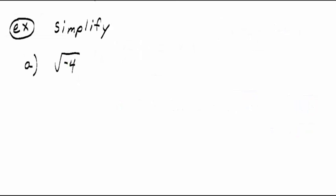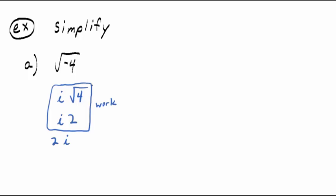The square root of negative 4: you always poke the I out first. Using that property, you rewrite it as I times the square root of 4. The square root of 4 is 2, so I times 2, written as 2I, is the answer. You don't even need the multiplication symbol — just 2I. You don't need to show the intermediate work; go right to the answer.